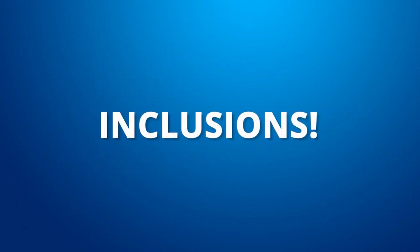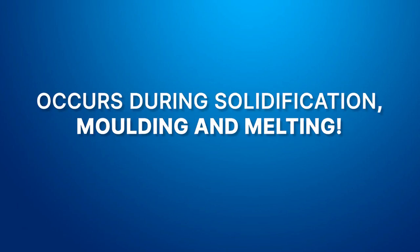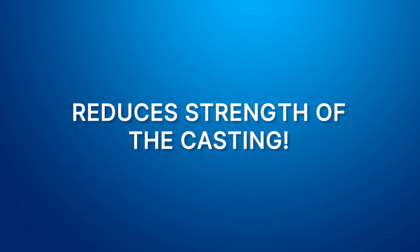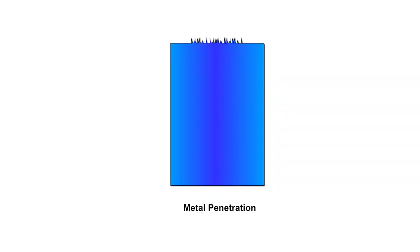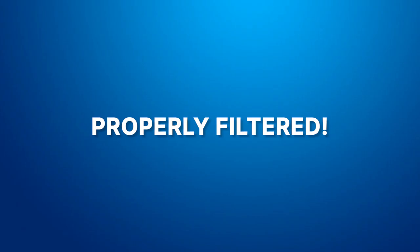The final defect is inclusions, denoted by capital letter G. Inclusions form during solidification, molding, and melting, and are regarded as a very harmful defect, because inclusions raise the stress and hence reduce the strength of the casting. They occur during melting when the molten metal reacts with oxygen in the air, with the crucible, or the mold material. Inclusions may also form from electrochemical reactions of components in the molten metal, or from slags and other foreign particles entrapped in the molten metal. To prevent this, molten metal is filtered properly before it is poured into the mold cavity.